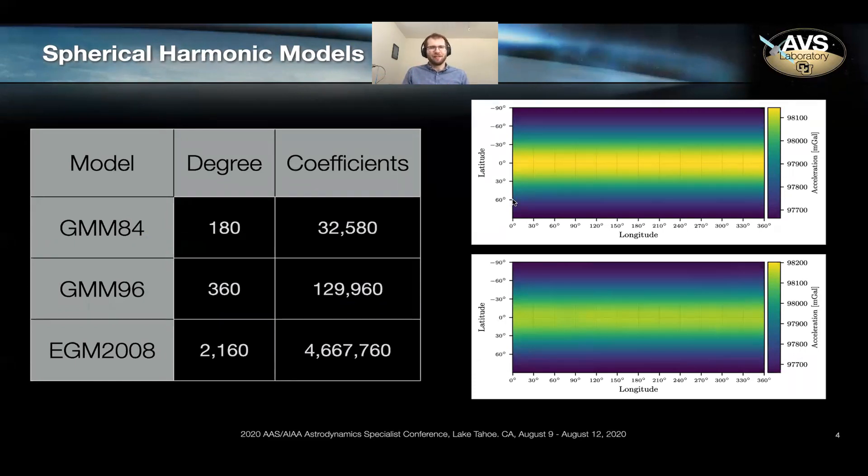And to discuss that at a high level, you'll see two figures here on the top right, you have a spherical harmonic model of Earth represented to degree and order two. So this effectively accounts for J two. The bottom represents a spherical harmonic model that goes up to degree and order 1000, which is approximately one million coefficients. And you'll notice they don't look all that different.